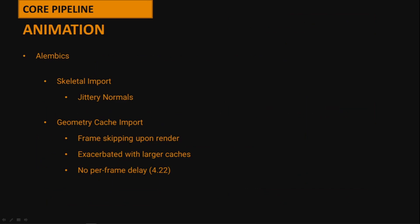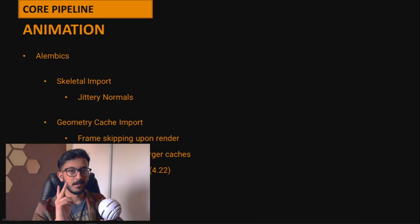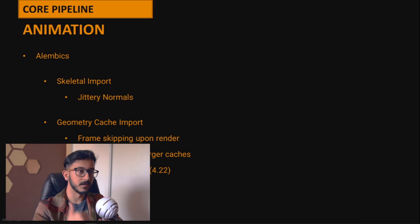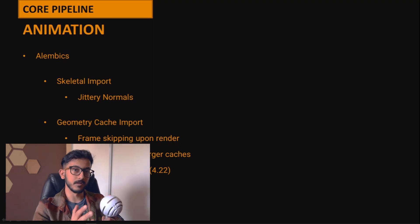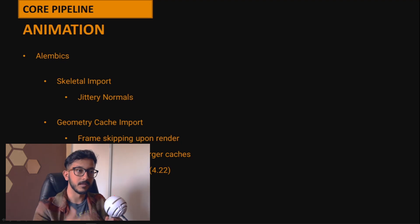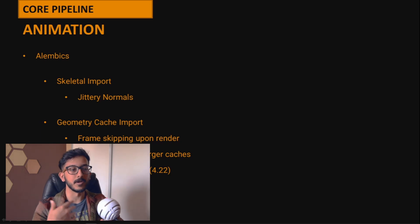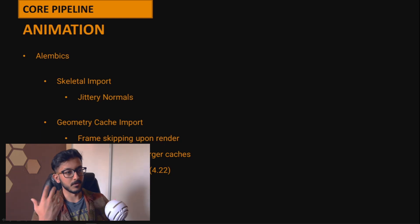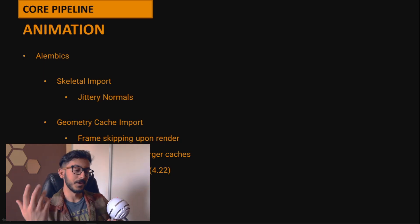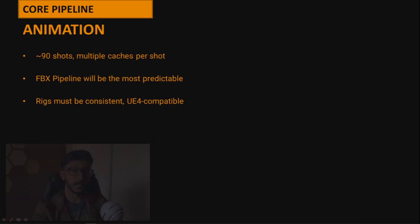On the animation side, early on we explored Alembics in Unreal. There are two methods — skeletal imports and geometry cache imports. With skeletal imports we found bugs with jittery normals that would occasionally flip or wiggle. With geometry cache imports that issue was resolved, however upon rendering we found the cache would occasionally jump a frame or jump back. So to circumvent all of this, we went with an FBX pipeline.